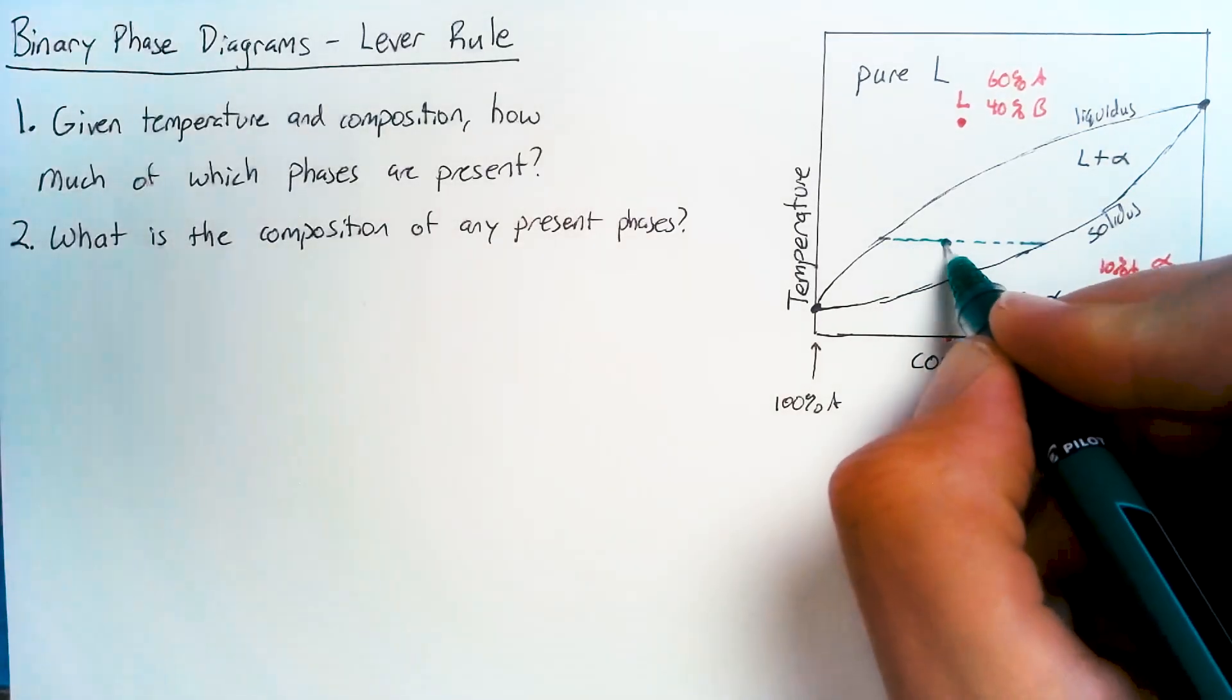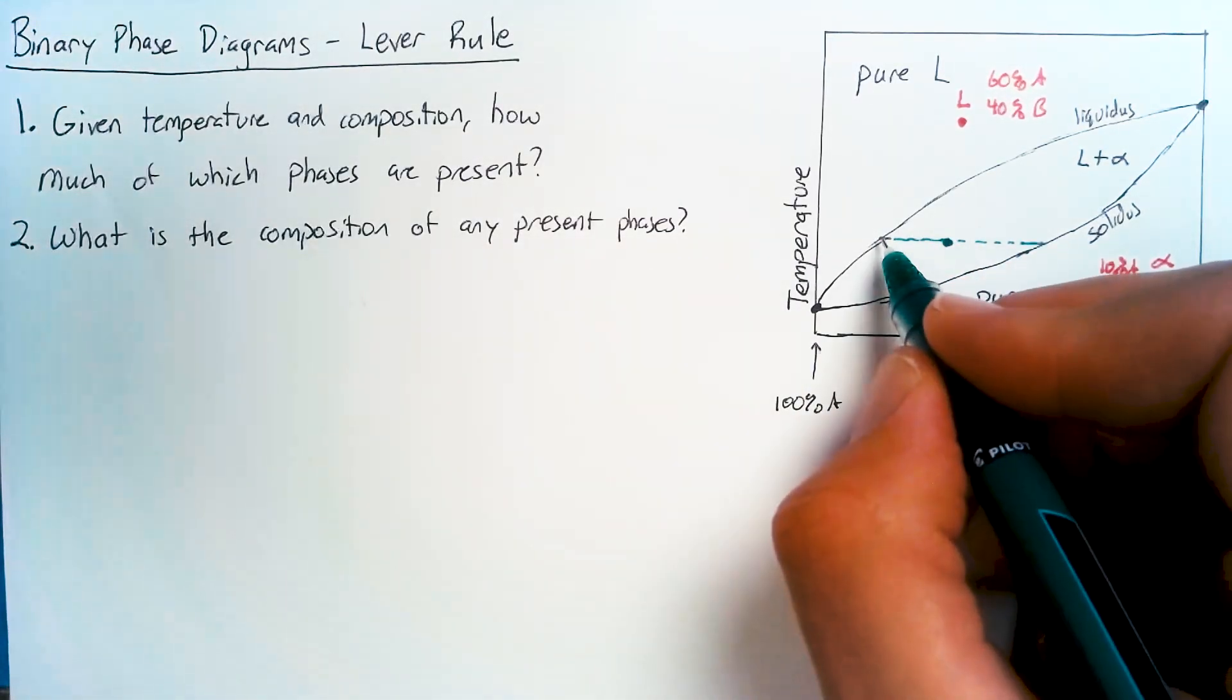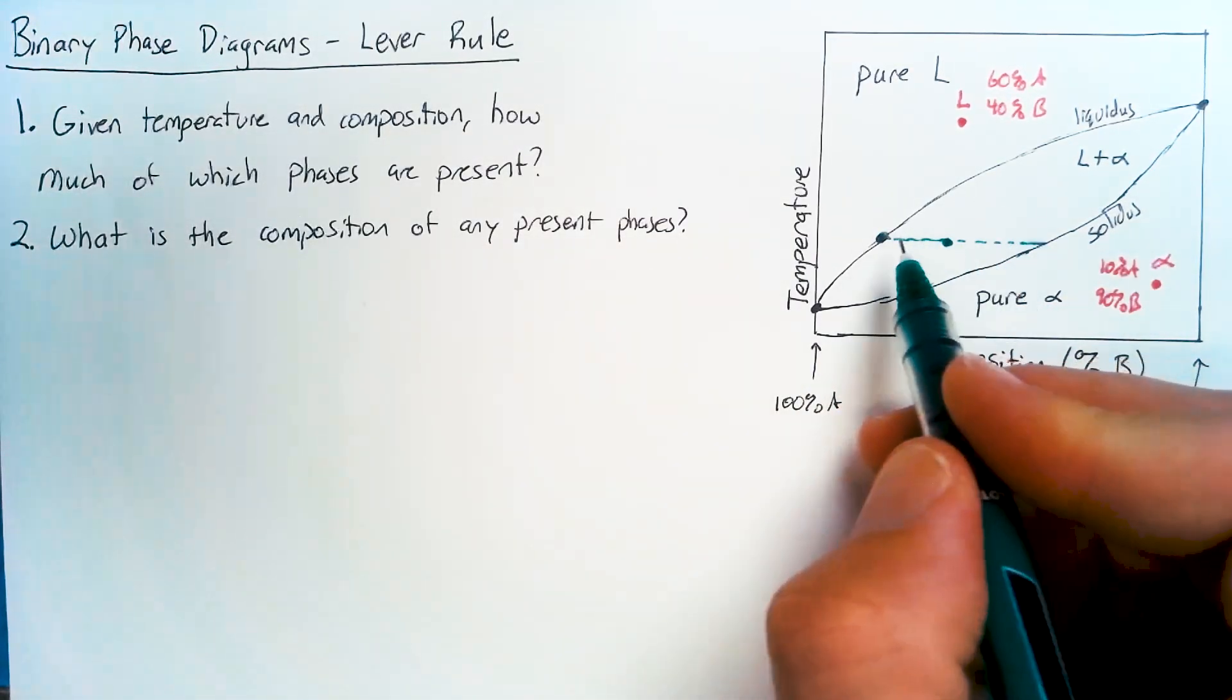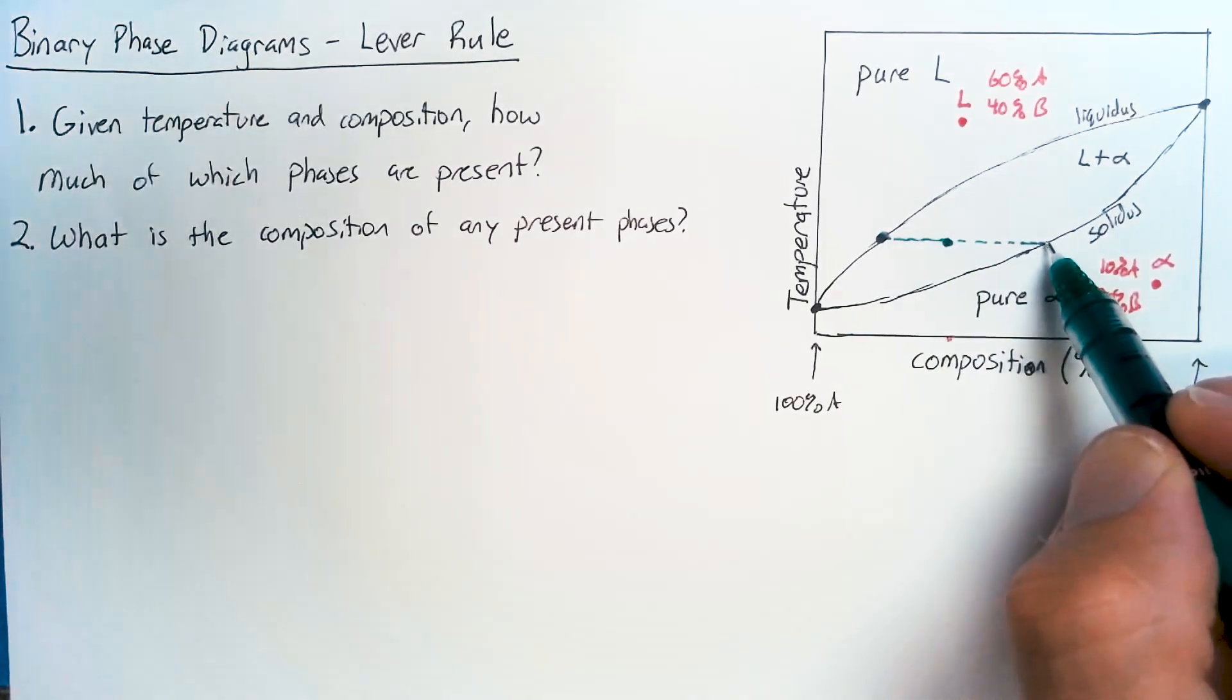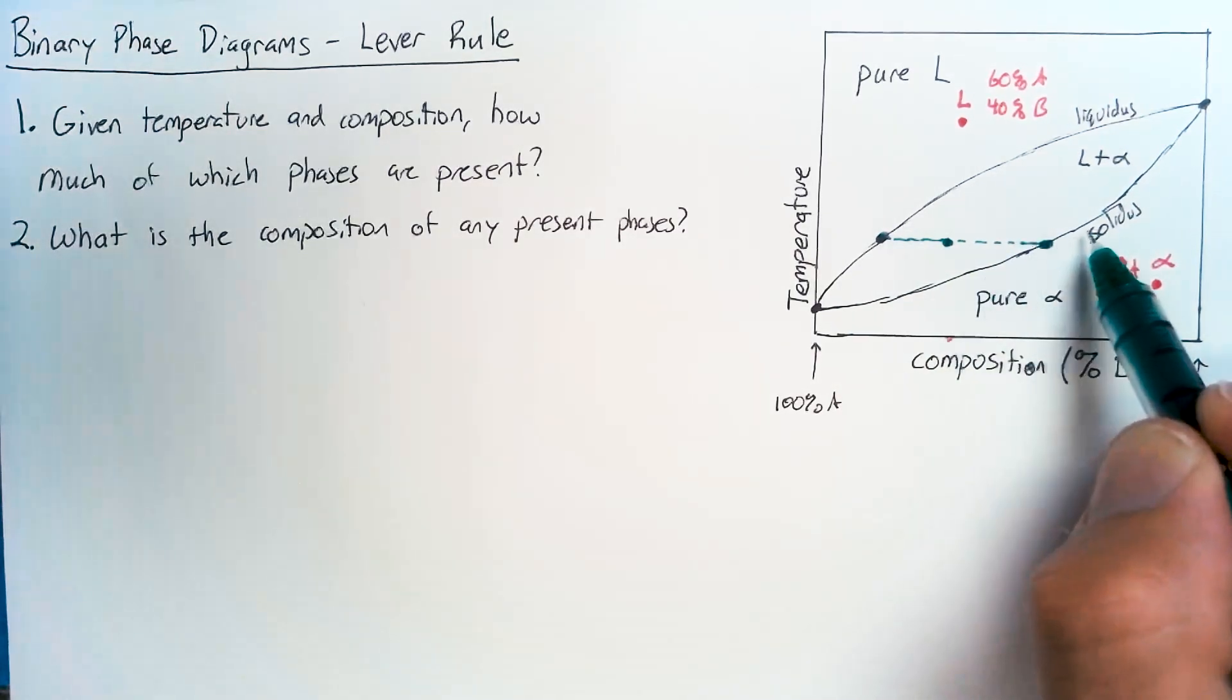And in order to figure out the composition of the liquid phase, we'd look at where this tie line intersects the liquidus line. And likewise, we do the same for the solidus line.